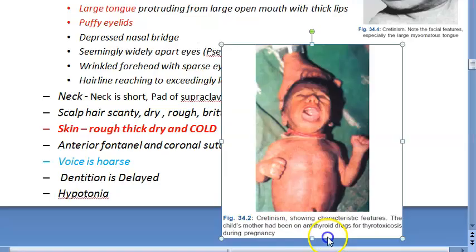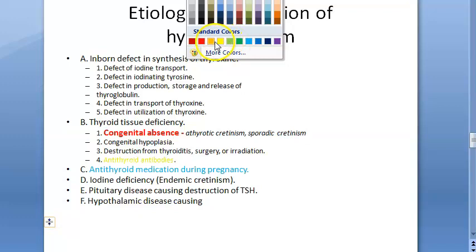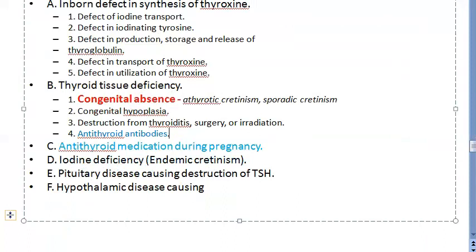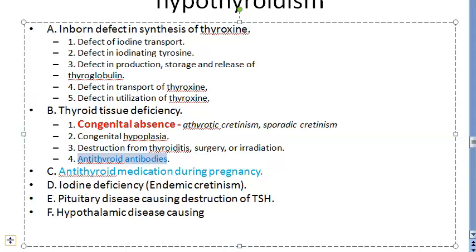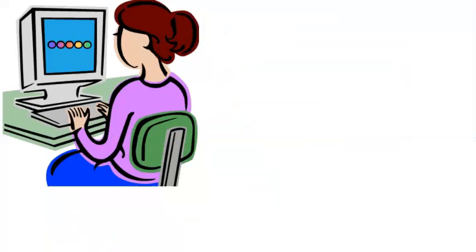Anti-thyroid antibodies can sometimes be present. Other causes include iodine deficiency, pituitary disease causing destruction of TSH, hypothalamic problems affecting TSH production, and inborn defects in synthesis — including defects in iodine transport, hormone production, release, storage, or utilization.